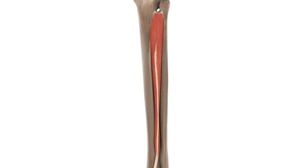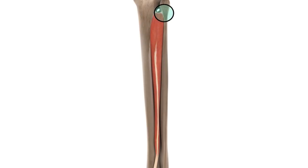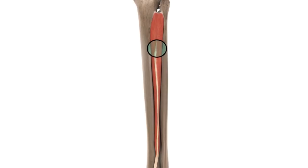At its proximal end, the tibialis posterior has three attachment sites. It originates from the posterior surface of the tibia, the posterior surface of the fibula, and the interosseous membrane of the leg that lies between the tibia and fibula.